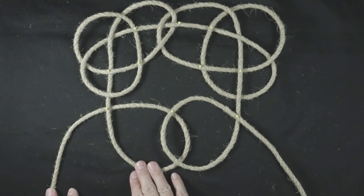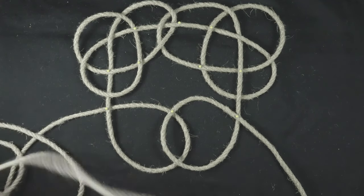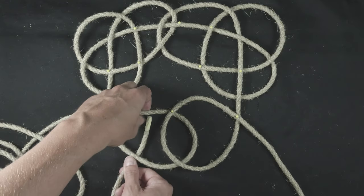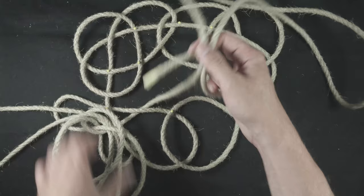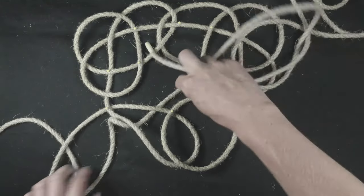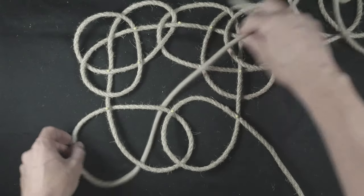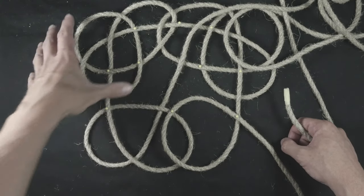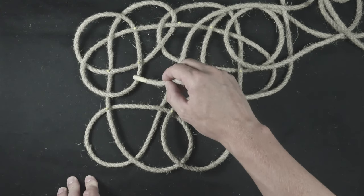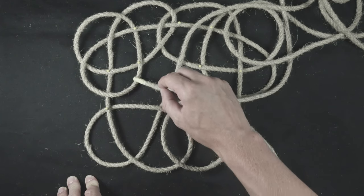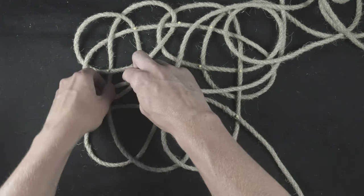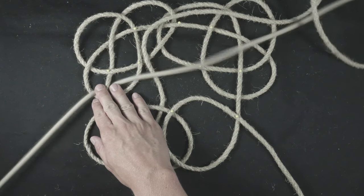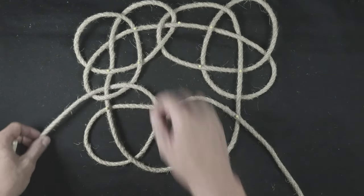Now on the left we continue passing under our loop, so under two. Like this. We now connect the bottom left corner to the top left one. We weave through these three strands: over, under, over. So over, under and over.